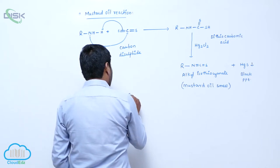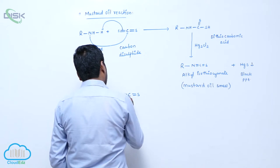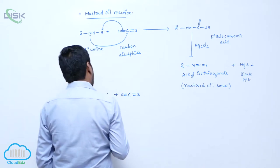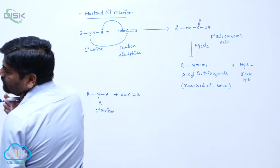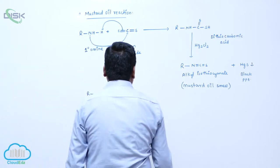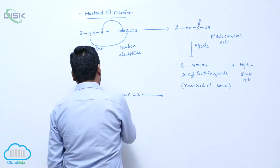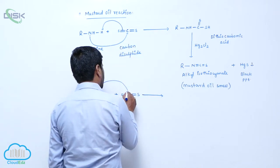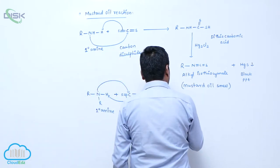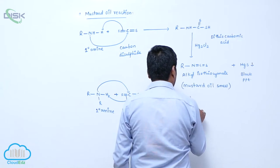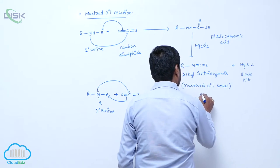carbon disulphide, it forms a lone pair of electrons attack on this, then this bond shifted here. Now it forms C double bond S, here is SH.